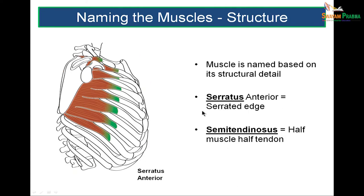Naming muscles based on their structure: the serratus anterior has digitations like a saw-toothed serrate appearance, hence it is aptly called serratus anterior, meaning serrated edge. Similarly, the semitendinosus in the posterior thigh is half muscle and half tendon, hence the name.